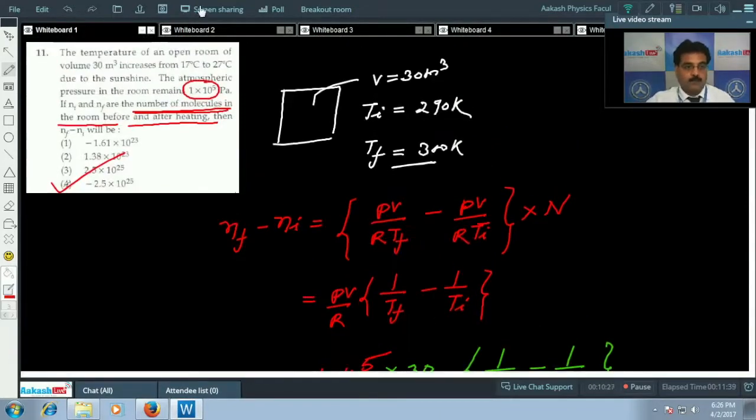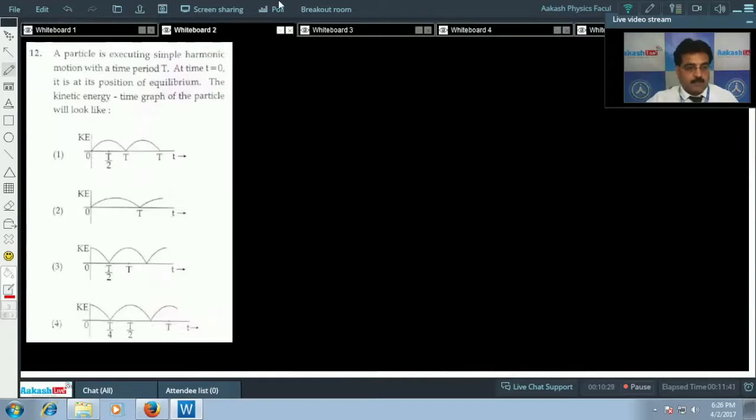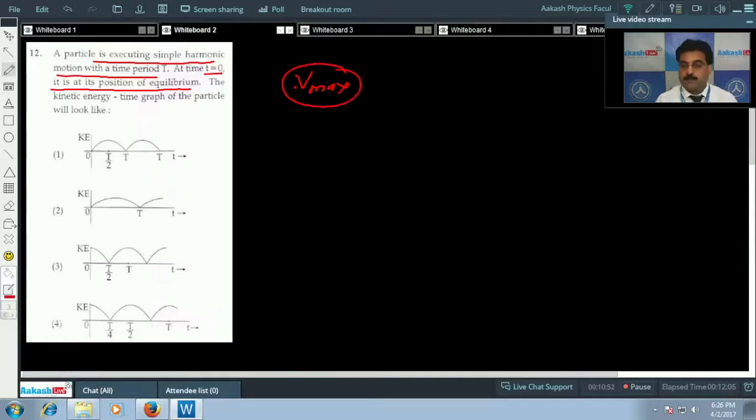Now we are going to take question number 12. A particle is executing simple harmonic motion with time period T. At time t equals 0, it is at its position of equilibrium. At equilibrium position when t equals 0, speed will be maximum, so kinetic energy will be maximum. Now I am going to take some data.